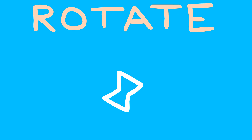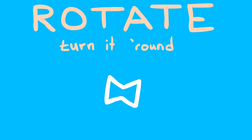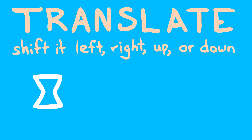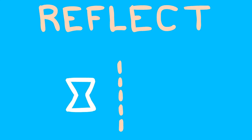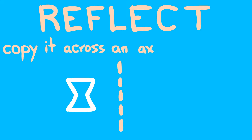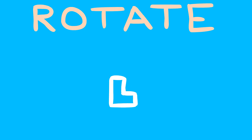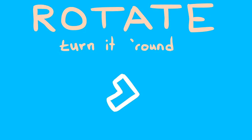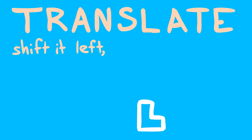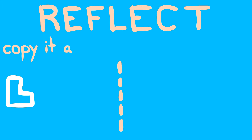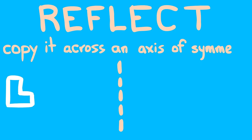Rotate — turn it round. Translate — shift it left, right, up or down. Reflect — copy it across an axis of symmetry.